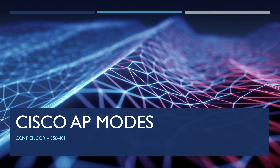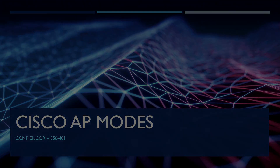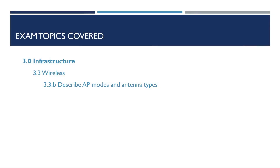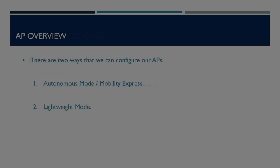In today's video we're going to cover an overview of the different AP modes we can use with Cisco APs. This video forms part of the CCNP Enterprise Core Exam Series 350-401. The exam topic covered by this video is 3.3b, which is to describe AP modes.